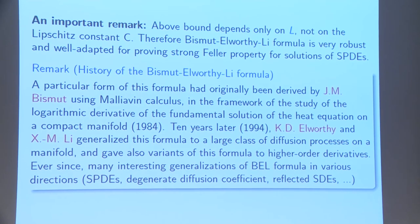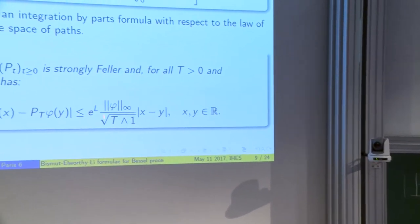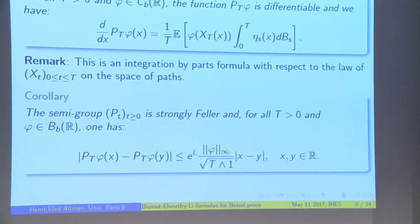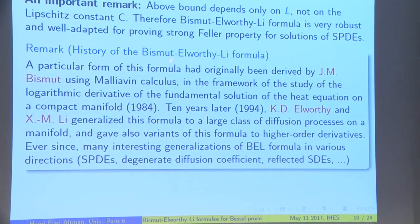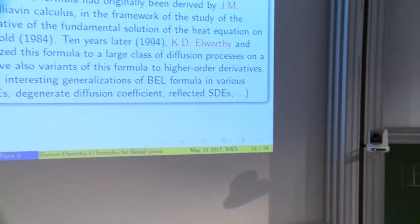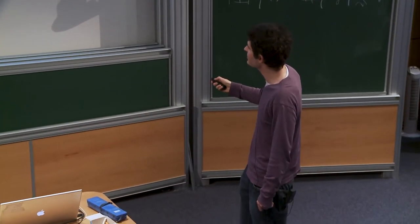The crucial remark is that this bound here only involves L. It does not involve the Lipschitz constant on the drift coefficient B. And, that's the reason why this Bismut-Elworthy-Li formula is very interesting and very successful. For example, when studying more complicated systems as SPDEs.